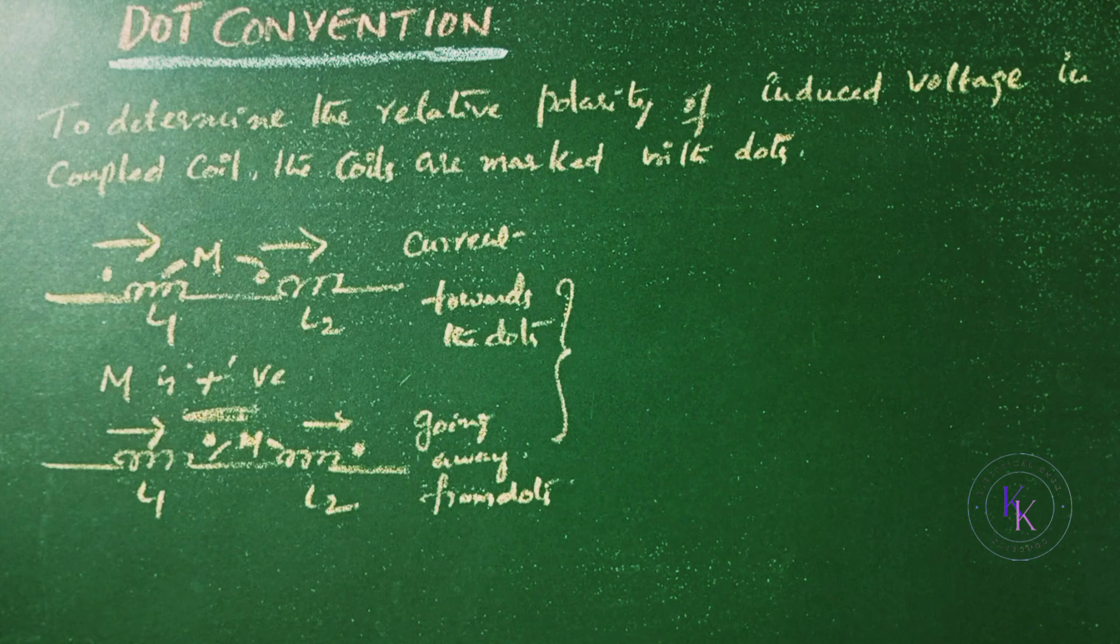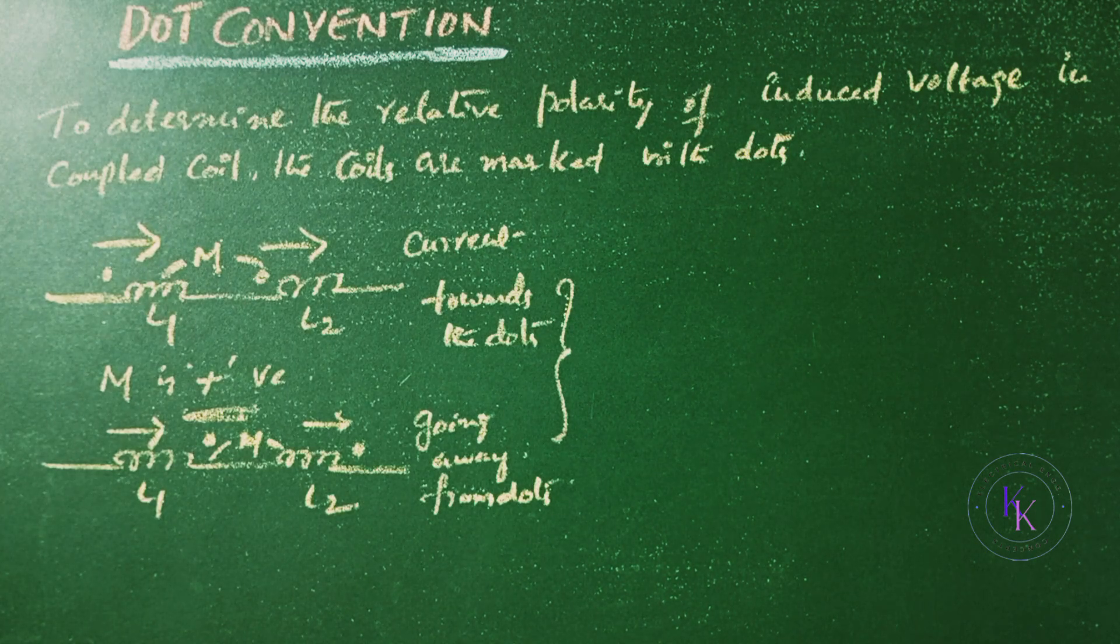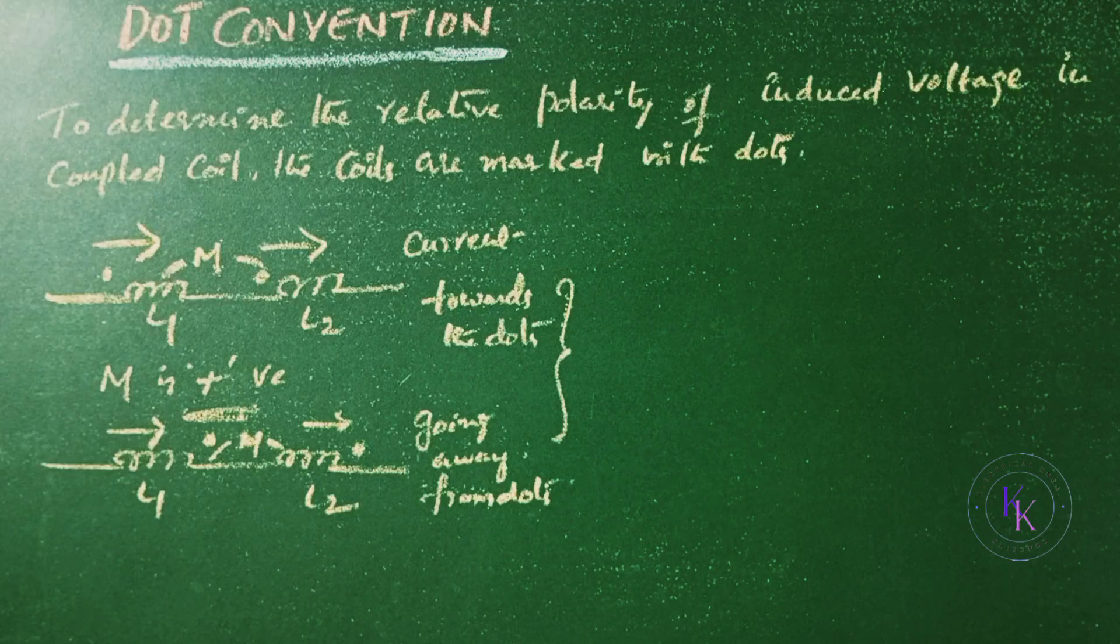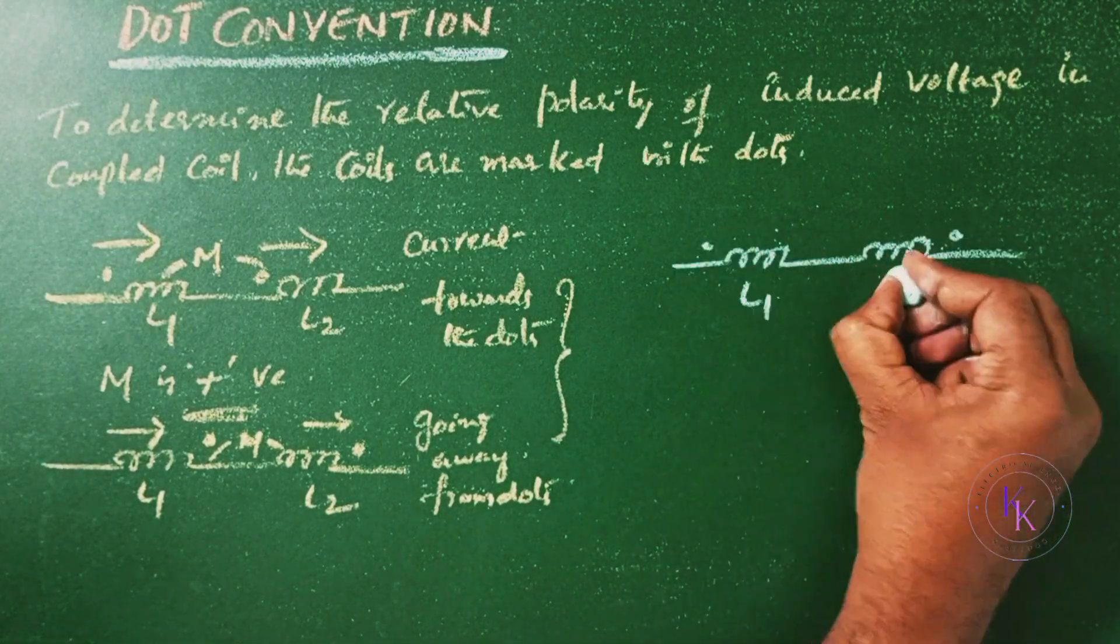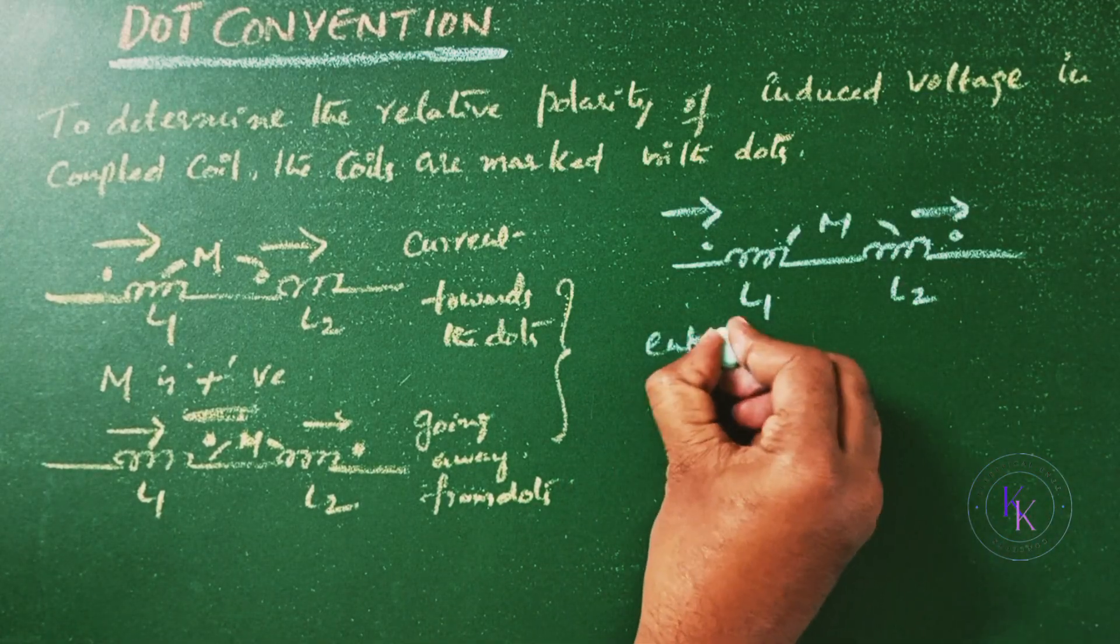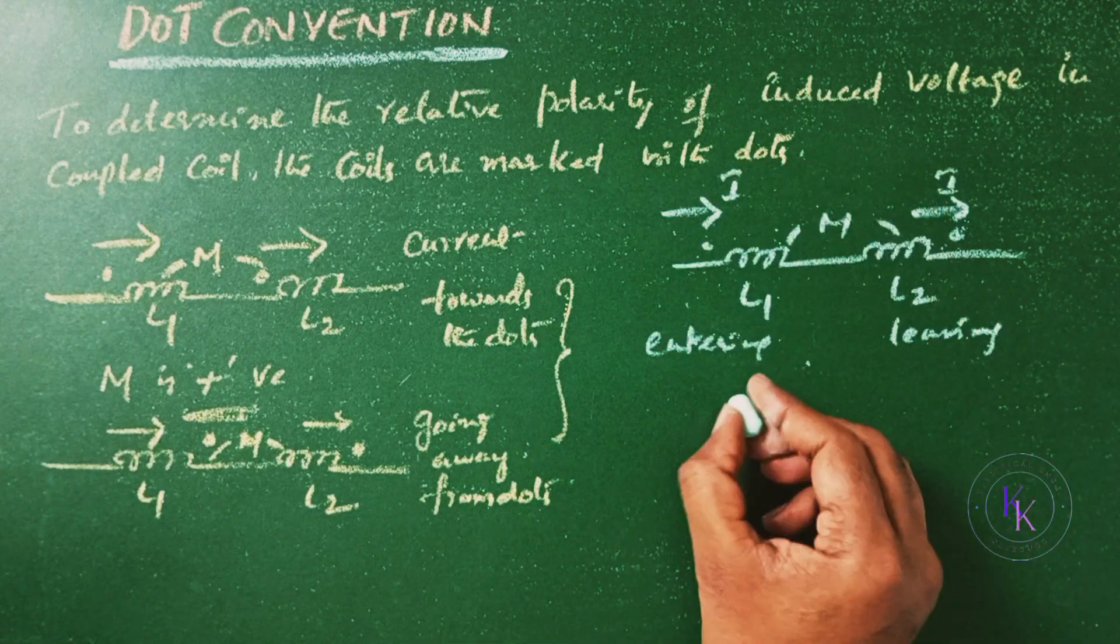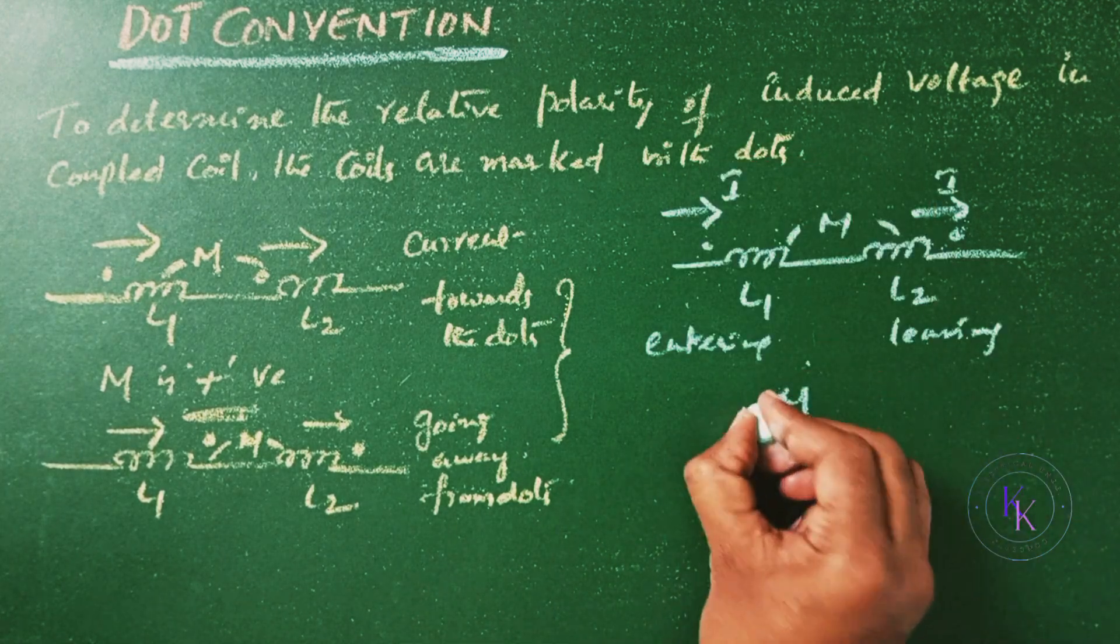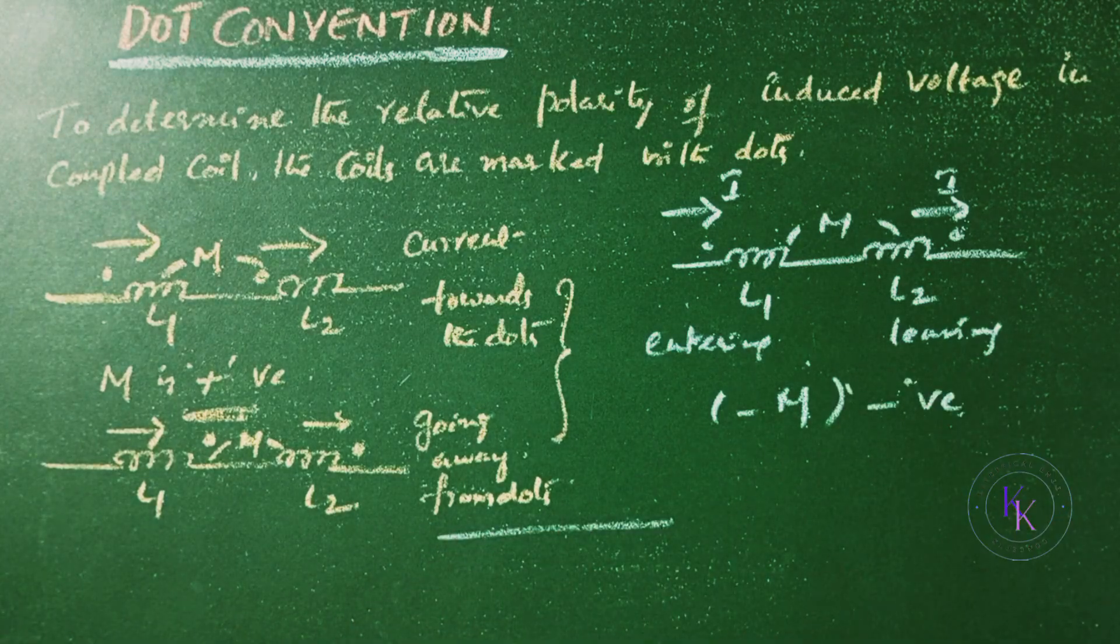Whereas when the current through the coil is leaving the dot of one coil and entering the other, the mutual inductance is taken as negative. You can observe here entering, here leaving the current I. Then in this case the mutual inductance is negative. This is in case of series coupled coils.